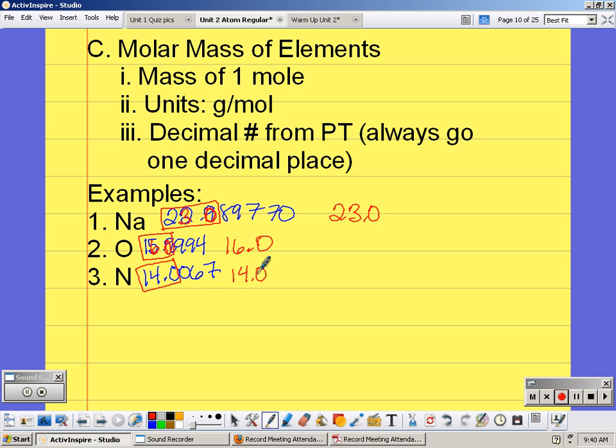Now not all decimals, or not all masses end in .0. So if we look at three more: magnesium, sulfur, and chlorine. On the periodic table, magnesium is 24.3050, so the molar mass would be 24.3. The zero doesn't make it round up.